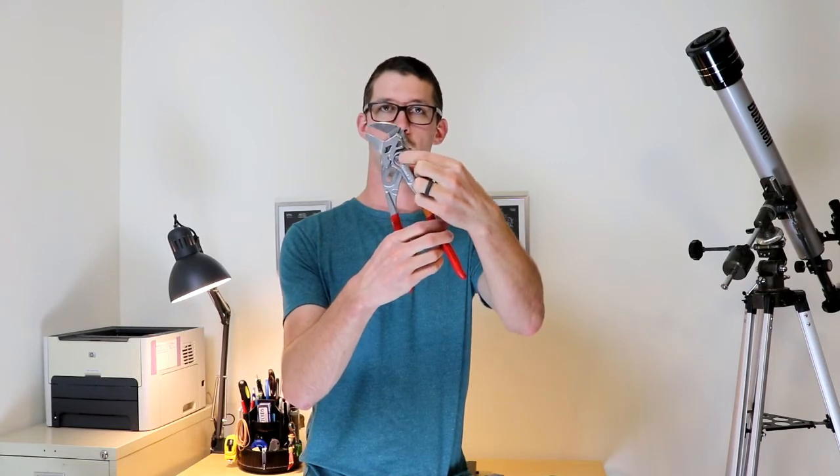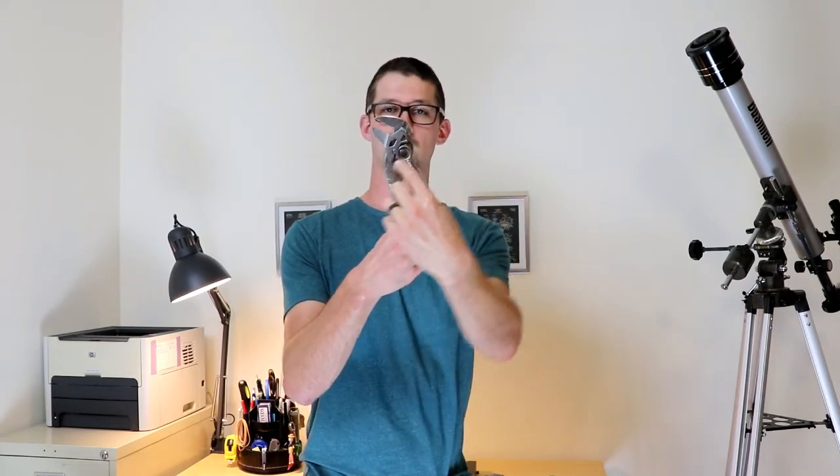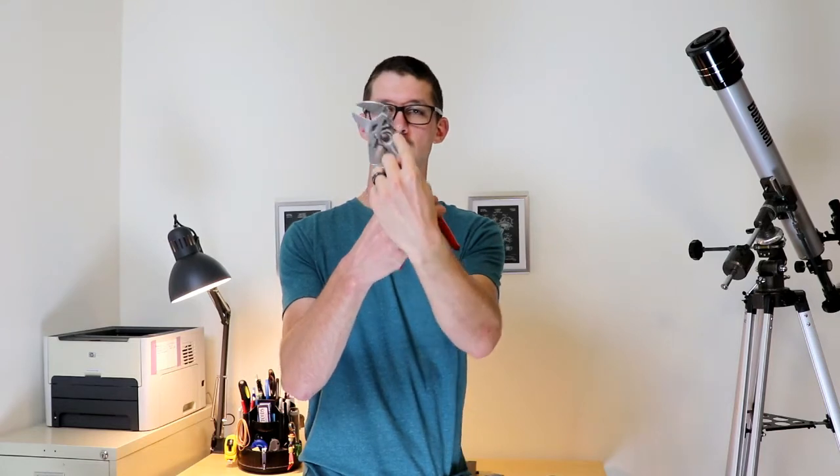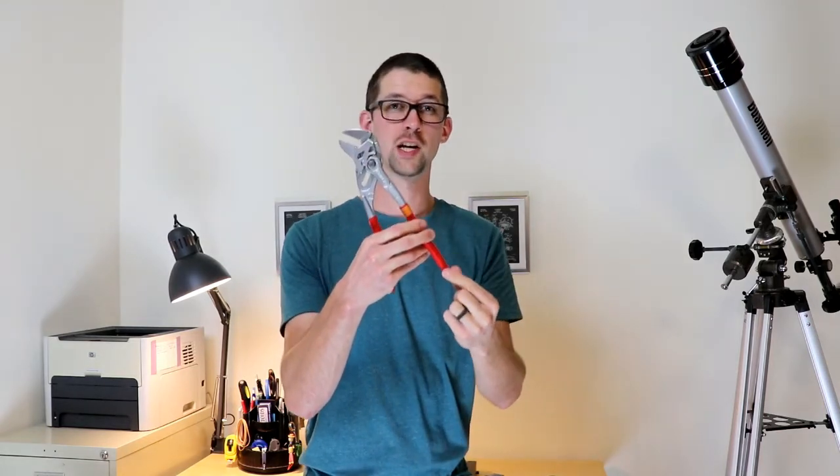On the other hand, if we look at the pliers wrench, we'll call the pivot point about where the center of that button is to the end of the cam here. And if you compare this distance to the length of the handle, you're going to get about 11 to one grip ratio. So when you clamp down on a pair of pliers wrench, you're going to get a lot more force on the fitting than you do with a pair of channel locks.